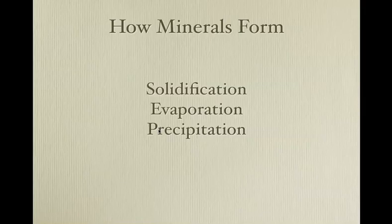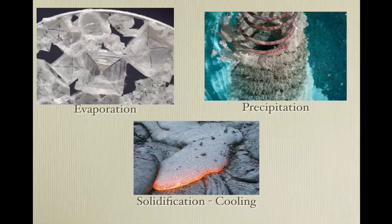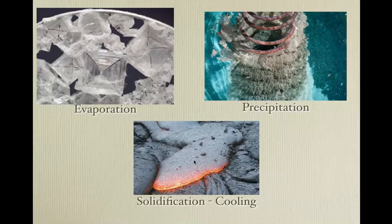Another way minerals form: you dump two different liquids together, each containing a different element or molecule. Those molecules can combine, switch ions, and one of the new molecules may drop to the bottom. Here is an example of evaporation — if you've ever left salt water on your counter overnight in Arizona and came back the next morning, you might have noticed crystals on your counter. Here's an example of solidification: when molten material cools, you get minerals forming.